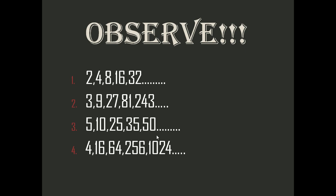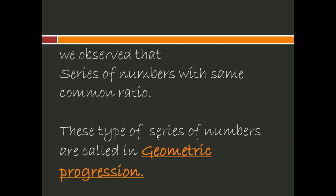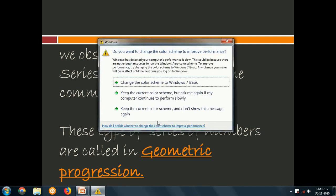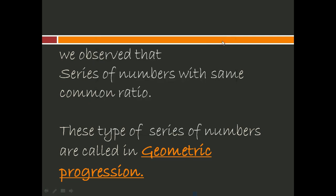Instead of adding, we are multiplying here. When you add a fixed number, those series are in arithmetic progression. Now, when we multiply a fixed number each time, what do we call them? We observe that series of numbers with the same common ratio — the number by which we multiply — are called geometric progression. When you multiply to get the next number, they are in geometric progression.